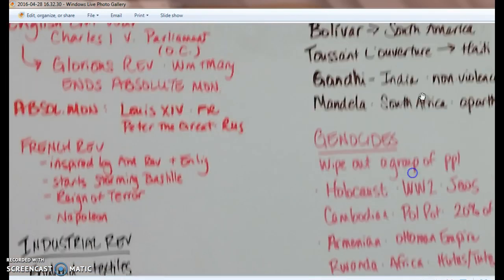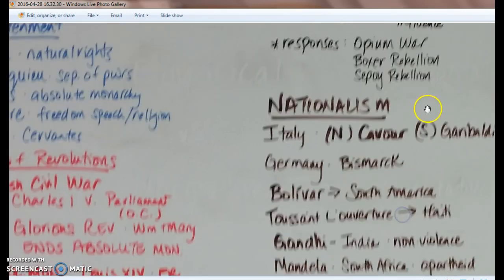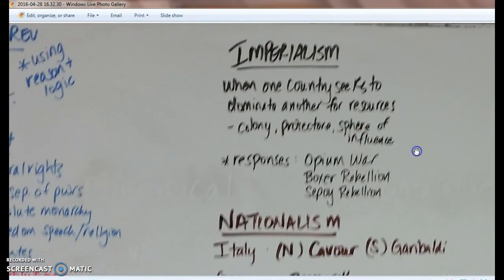The Industrial Revolution ultimately leads to imperialism, because they need resources to make goods in factories and markets to sell their goods. When one country seeks to dominate another, that is imperialism. The responses to imperialism include the Opium War in China, the Boxer Rebellion in China, and the Sepoy Rebellion in India. Remember that political cartoon of Cecil Rhodes draped across Africa.